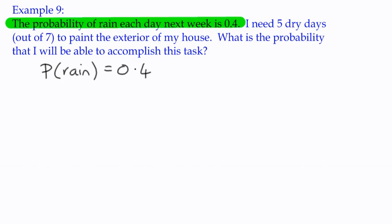Which means that the probability that there will be no rain is 1 subtract 0.4, which is 0.6. In other words, there's a 60% chance that I'll have a dry day.